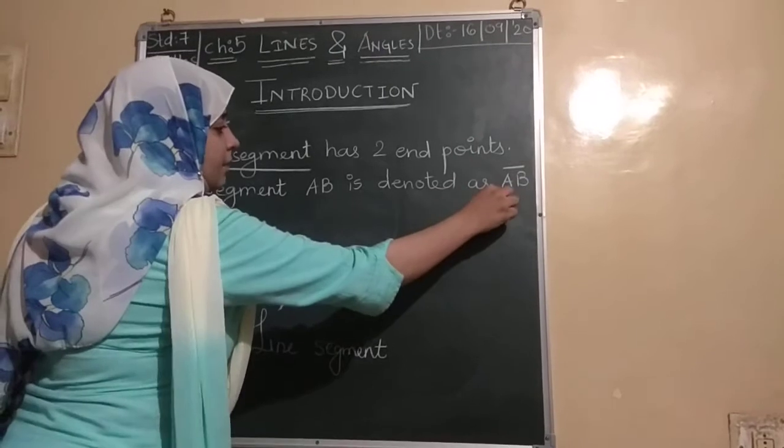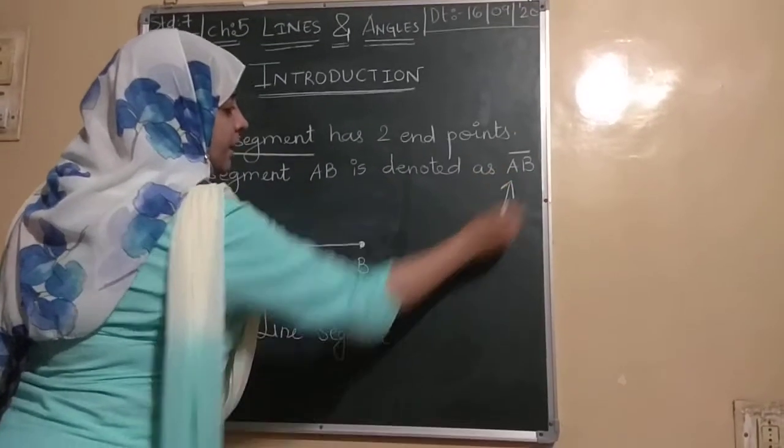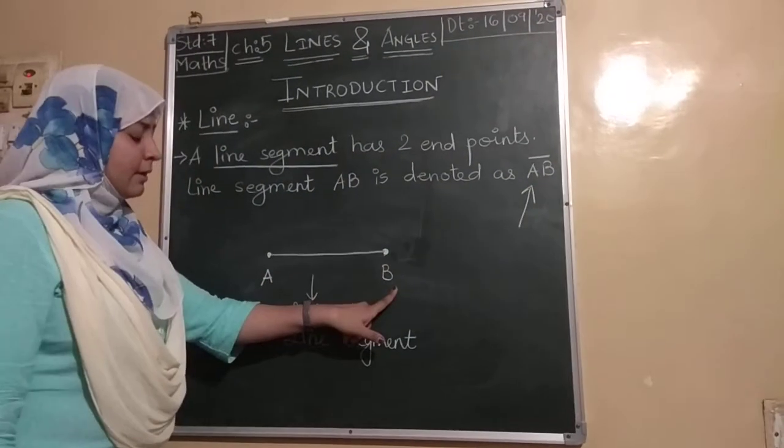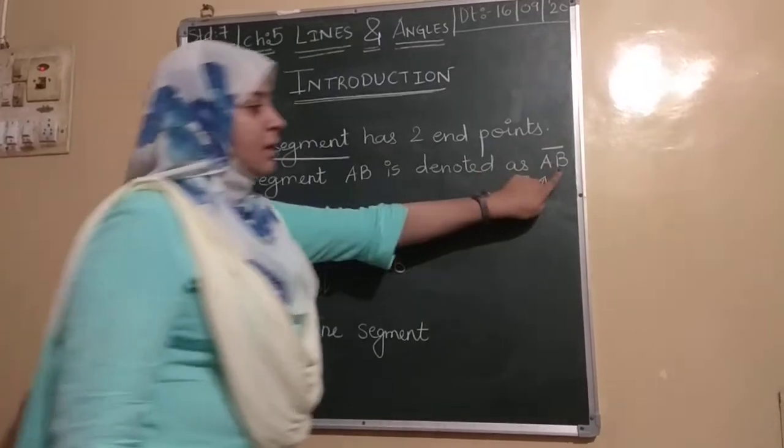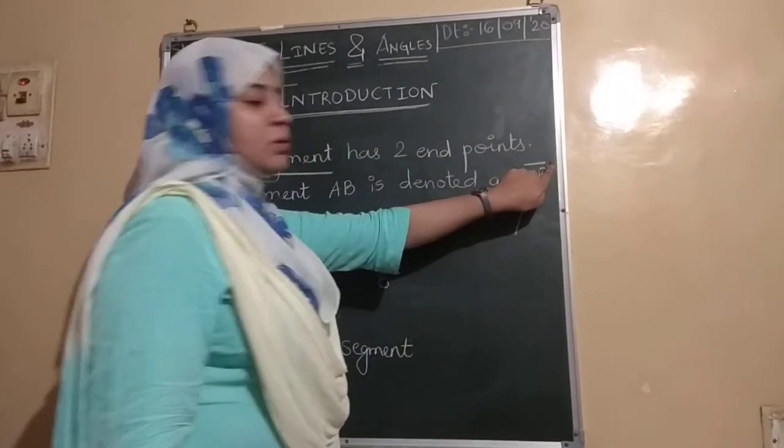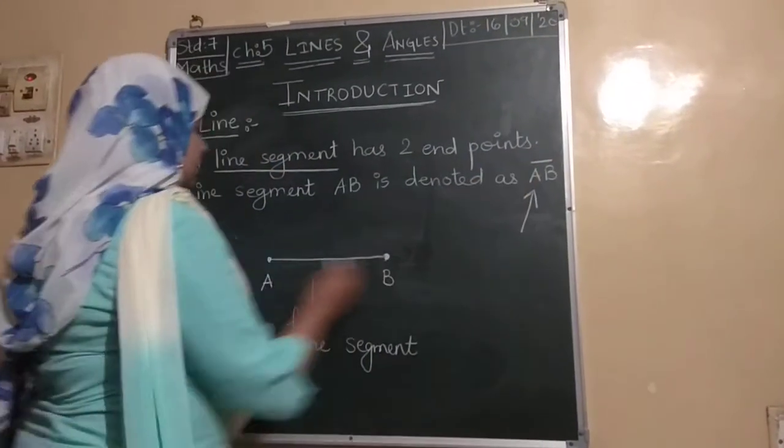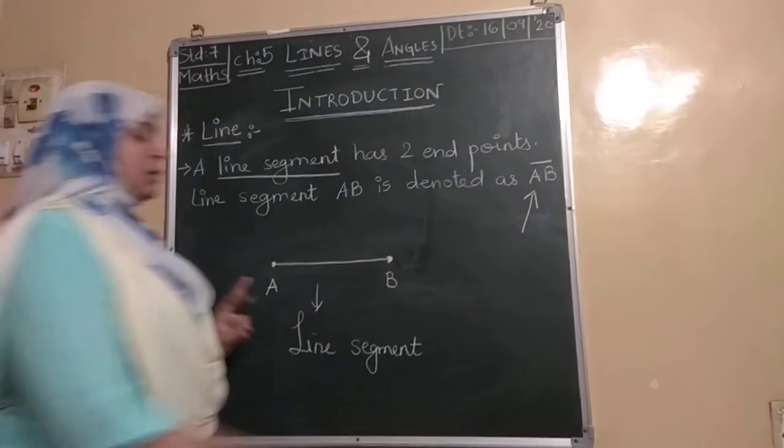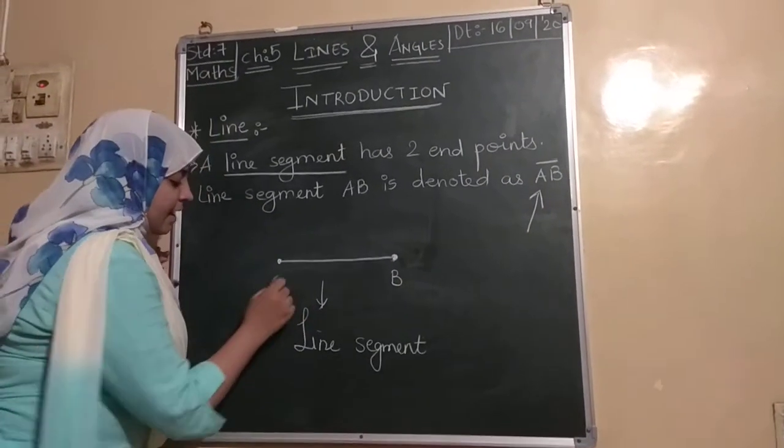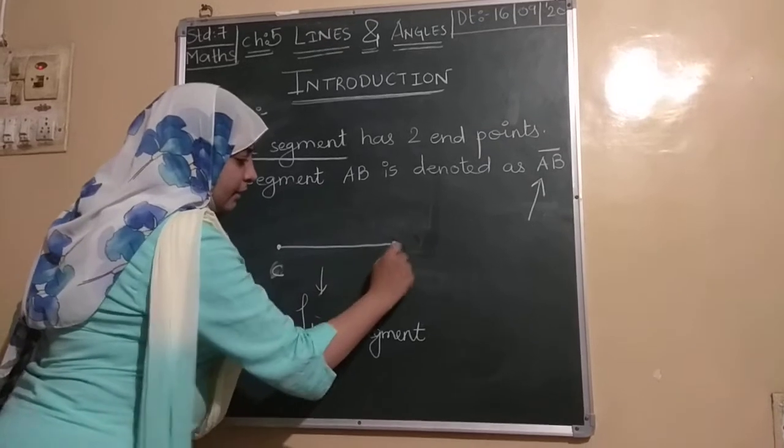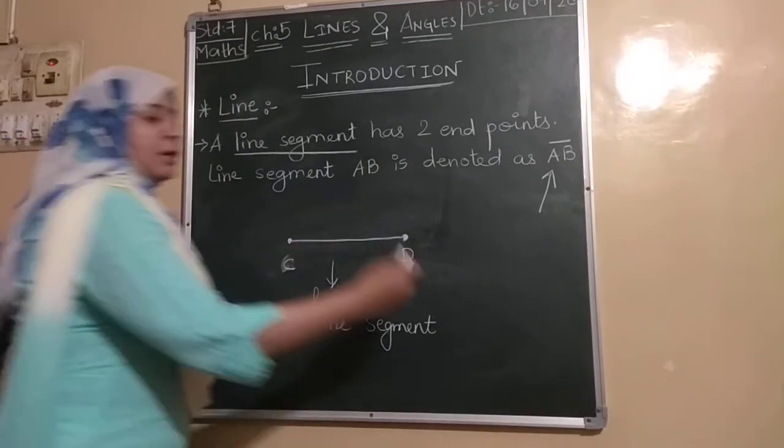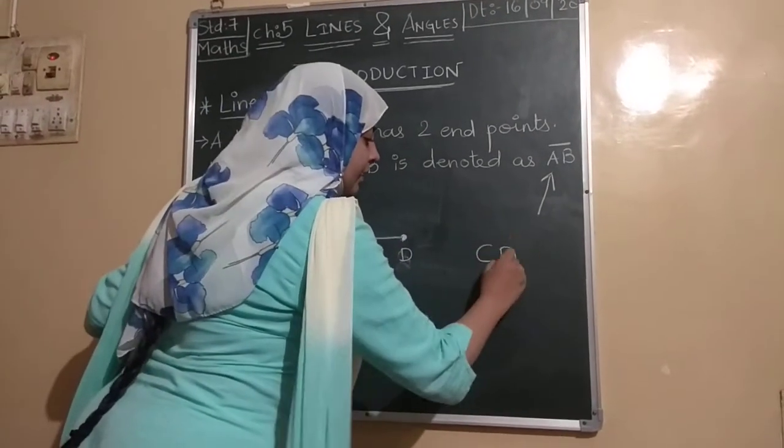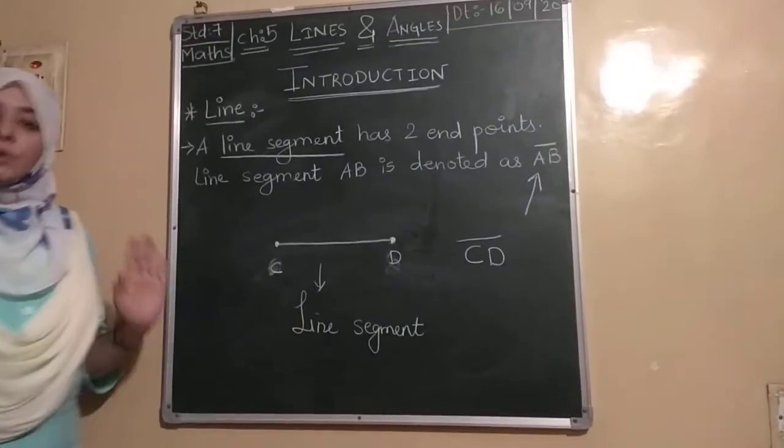If we want to symbolically denote line segment, we write the names of the endpoints with a bar sign above them. Actually, this is the sign of line segment. So if I have given names C and D, then you will write C and D with the line segment symbol.